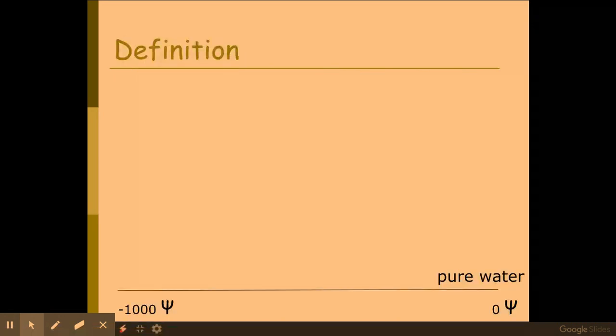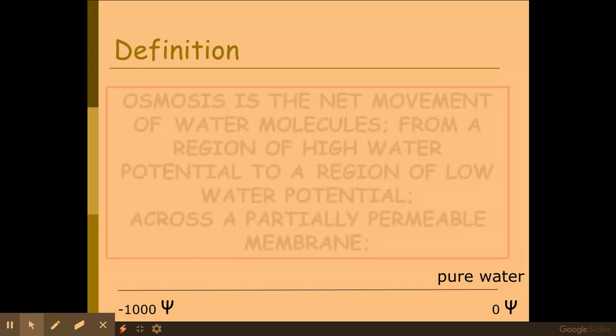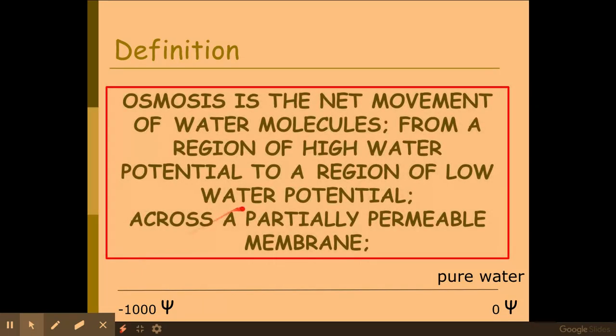So we need to know first of all our definition for osmosis which is slightly different from your GCSE definition. We're still looking at the net movement of molecules, really important you say the word net, but this time we're looking at it from a region of high water potential to low water potential. Water potential is the ability of water to move depending upon solutes. It's really important as well we say through a partially permeable membrane, not semi-permeable, we don't get marks for that, but we say partially permeable.